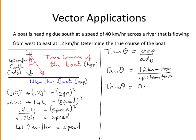12 divided by 40 is 0.3. Theta is then the tan inverse of 0.3. This is equal to 16.699 degrees. So this is approximately 16.7 degrees.